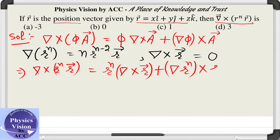Now since this is 0, del cross r is 0, so this term is gone. What is the gradient of this? Its gradient is n r to the power n minus 2 times r vector.